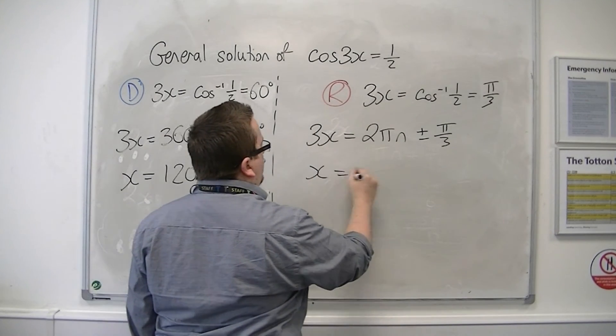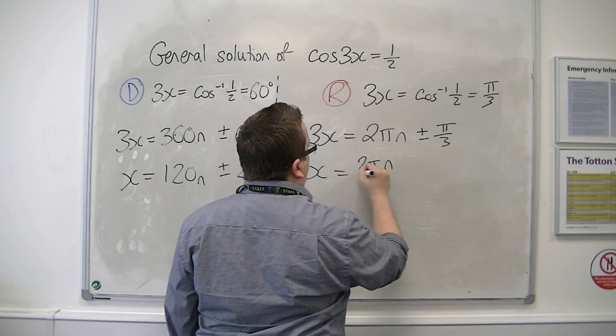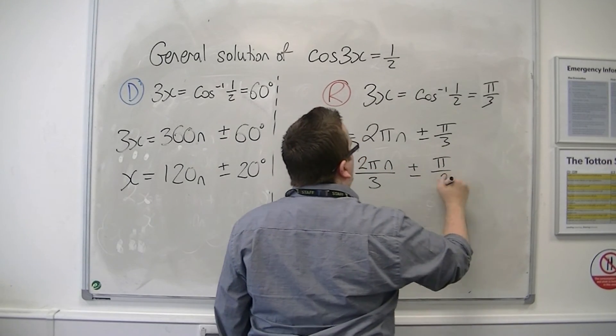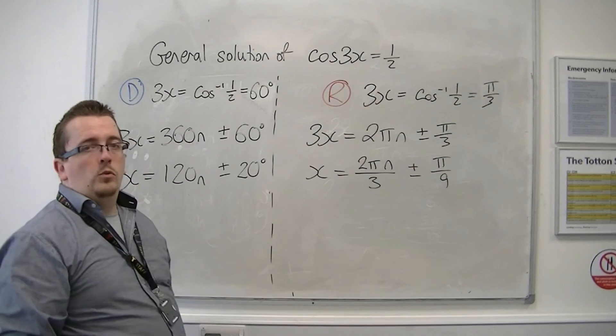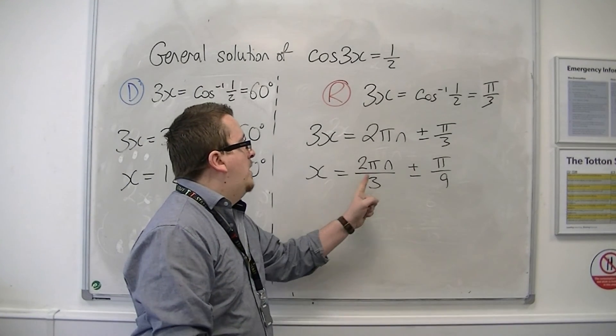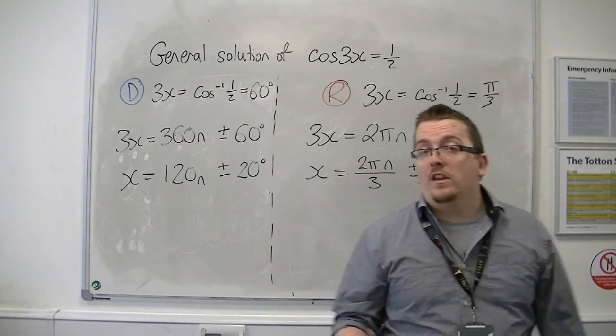Then divide through by 3. And you could write that as 2 thirds pi n, or 2 pi over 3 times n, or however. So 2 pi n over 3 plus or minus pi over 9.